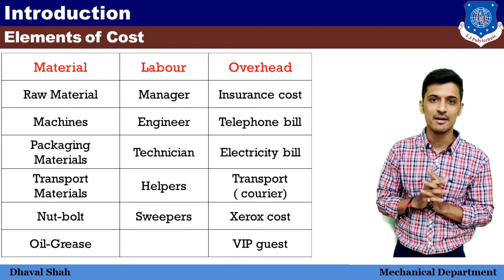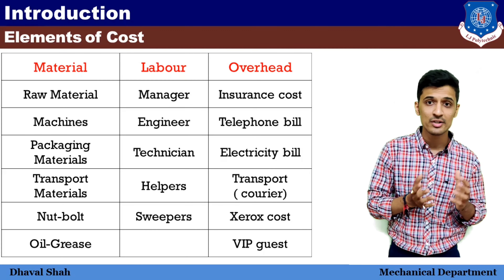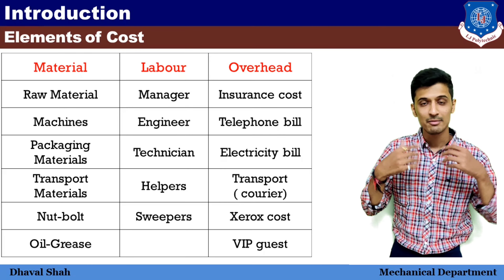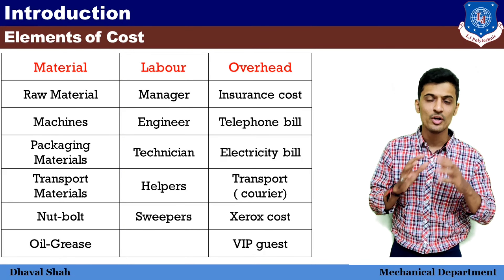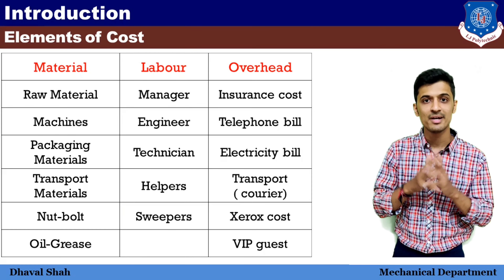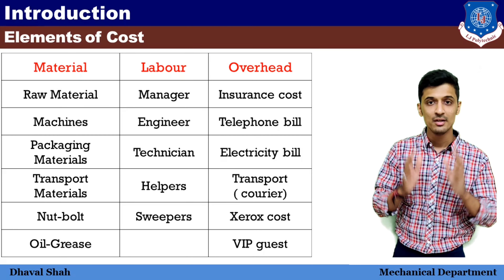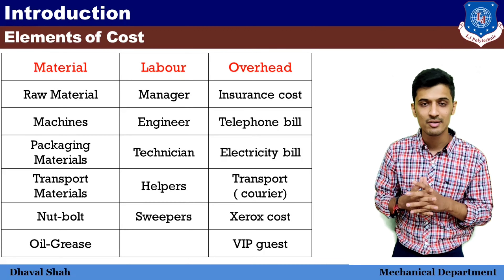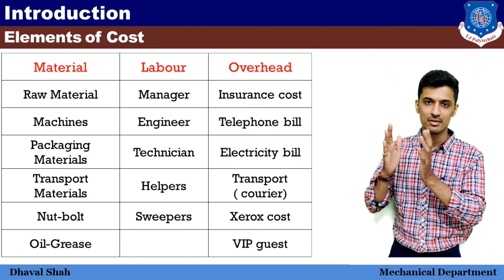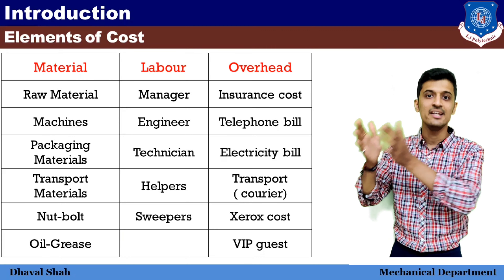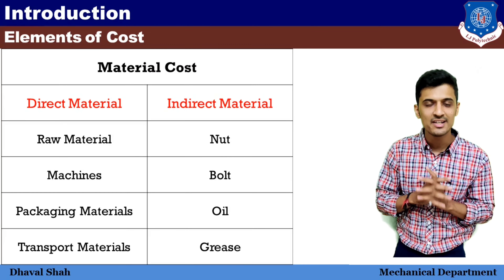Aur last mein aata hai overhead expense. Overhead expense ka matlab kya hota hai — agar simple language mein samajhna chahe toh unexpectedly jo aapne socha nahi tha aur woh expense aa gaya, that is called overhead expense. Overhead expense mein hum kisko ginenge — toh insurance hota hai. Kai baar kya hota hai ki hum pehle se machine tay kiya hota hai ki yeh machine hum lenge, baad mein jake hum woh machine lete hain, toh uska insurance lete hain — toh woh ek overhead expense hai. Uske baad telephone ka bill aata hai — woh ek overhead expense hai. Electricity bill hai — usko hum overhead expense ginenge. Transport ka jo expense hota hai aur xerox/print ka jo expense hota hai usko bhi hum overhead expense mein ginenge.